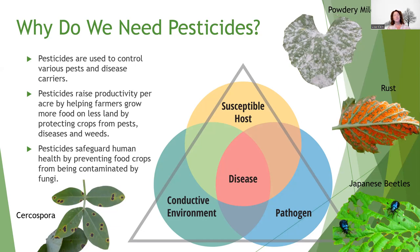How do we know we have a problem? Skimming over the top of this, you'll see the disease triangle in the middle. In order to get disease, you have to have the right — or conducive — environment, a pathogen (which can be an insect, a fungal organism, a virus, or anything else), and a susceptible host. You've got to have all of those things overlapping to provide the right conditions to get that disease. It's valuable to understand that so you know why we need pesticides.